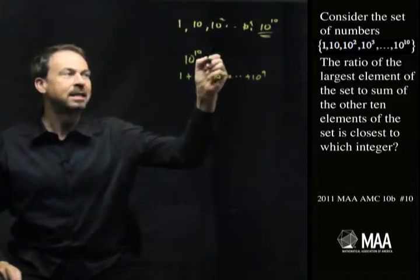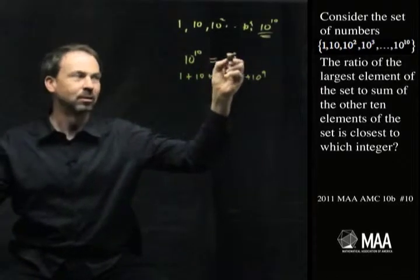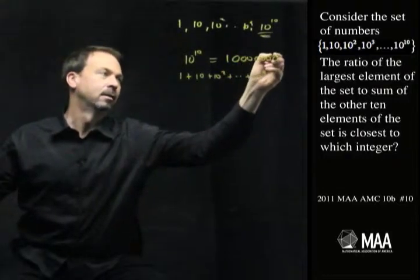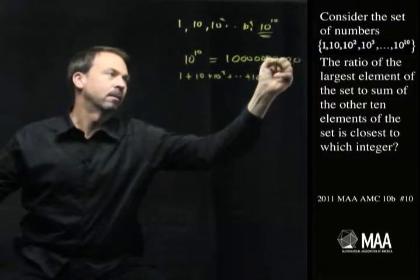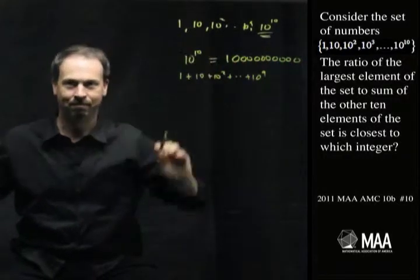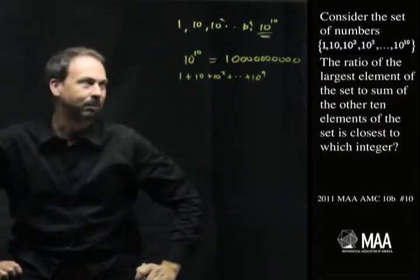What is 10 to the 10? That I can do. It's a 1 with 10 zeros after it — 1, 2, 3, 4, 5, 6, 7, 8, 9, 10. Some big number.